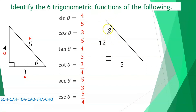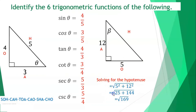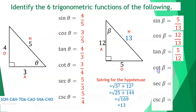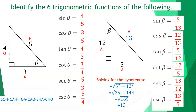Another example: given a right triangle with angle beta, where 12 is adjacent, 5 is opposite, and the hypotenuse is unknown. Using the Pythagorean theorem: the square root of 5² + 12² equals the square root of 169, which is 13. So the hypotenuse is 13. Sine beta = 5/13. Cosine beta = 12/13. Tangent beta = 5/12. Cotangent beta = 12/5. Secant beta = 13/12. Cosecant beta = 13/5.